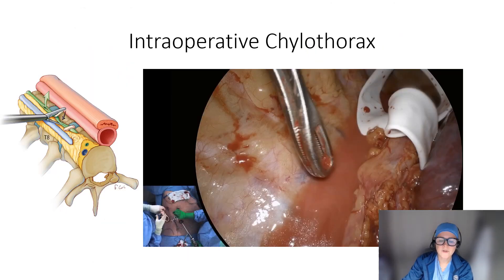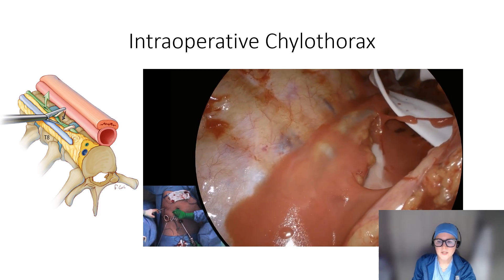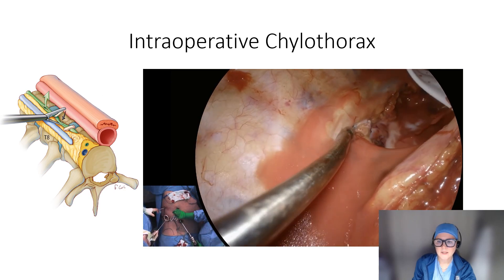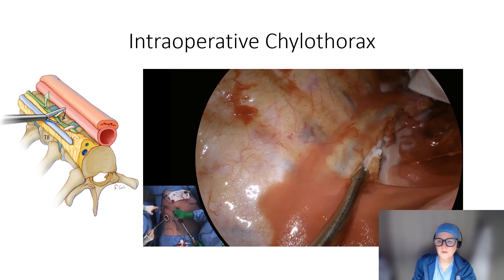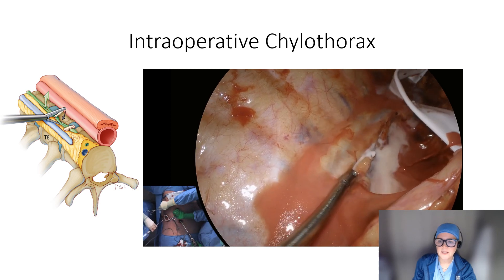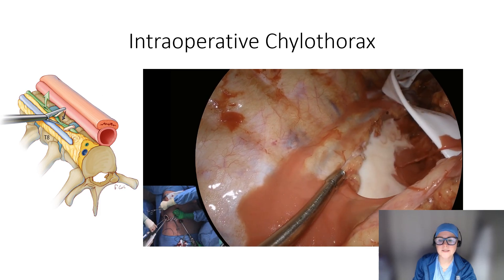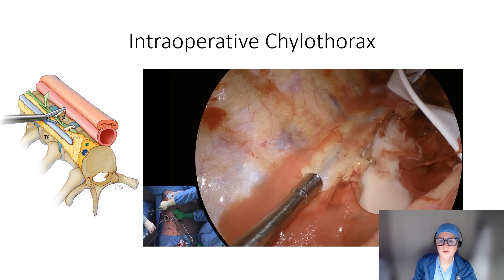In this video, you'll see thoracic duct transection with extravasation of chyle into the chest. The head is to the top, the stapler to the lower left, and the video orientation is shown in the bottom left of the frame. The white milky substance extravasating is medial to the azygous vein and anterior to the aorta. The free, open, flowing thoracic duct has been completely transected and chyle is leaking throughout the chest. The esophagus has been encircled with a Penrose drain as it is retracted out of the way. You'll see that we were able to take a stapler and clip just the area where the thoracic duct was leaking.